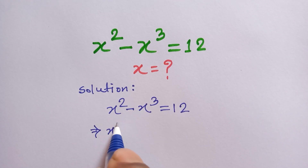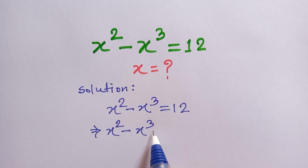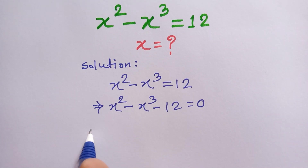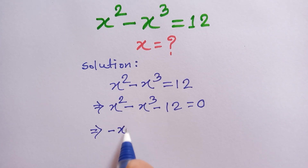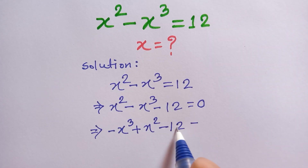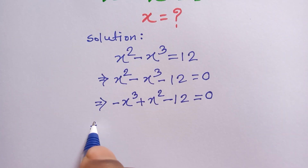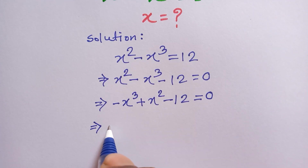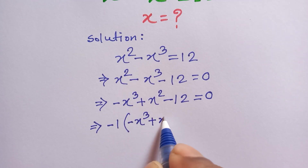We can write x squared minus x cubed minus 12 is equal to 0. Now we rearrange the terms so it will be minus x cubed plus x squared minus 12 is equal to 0.